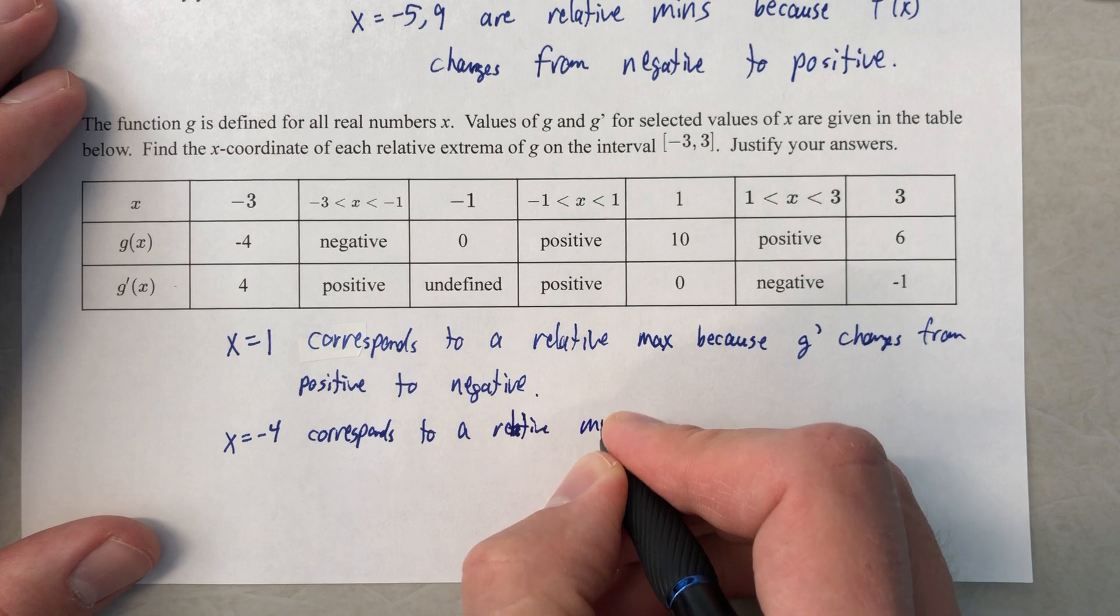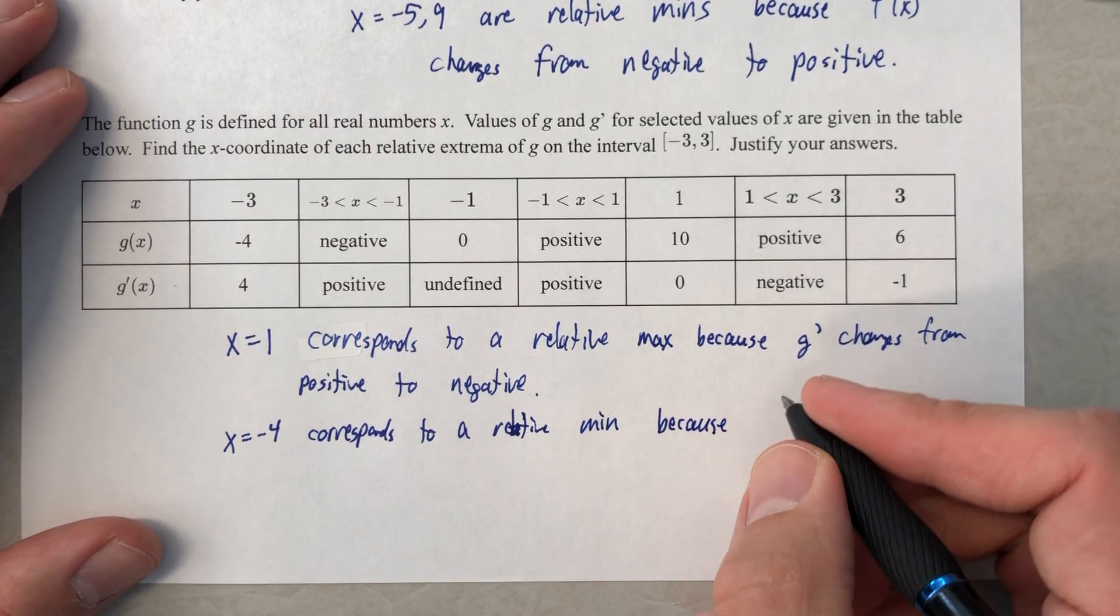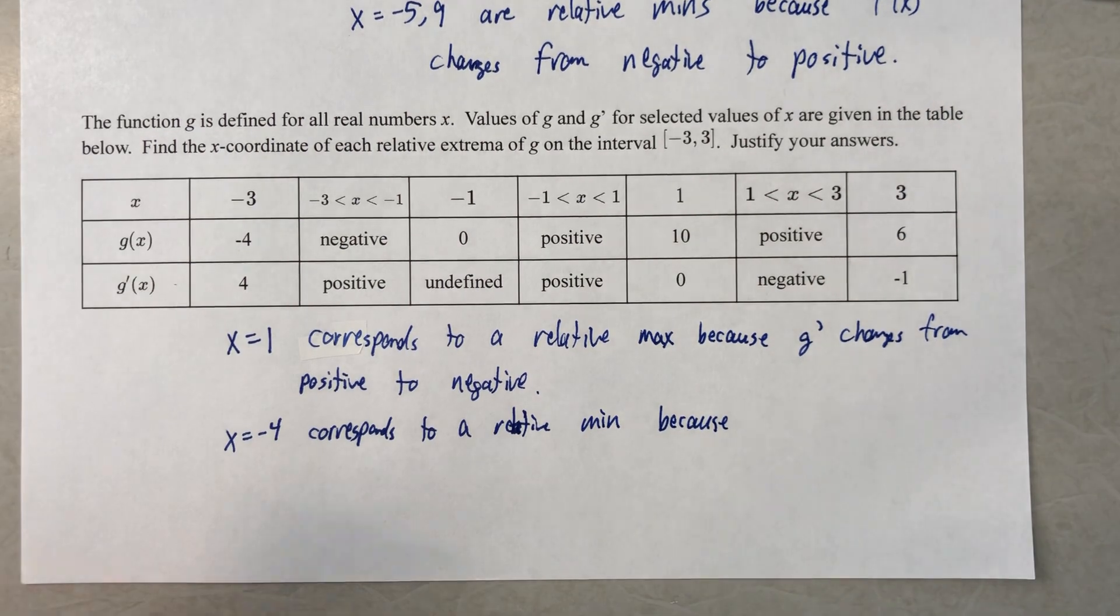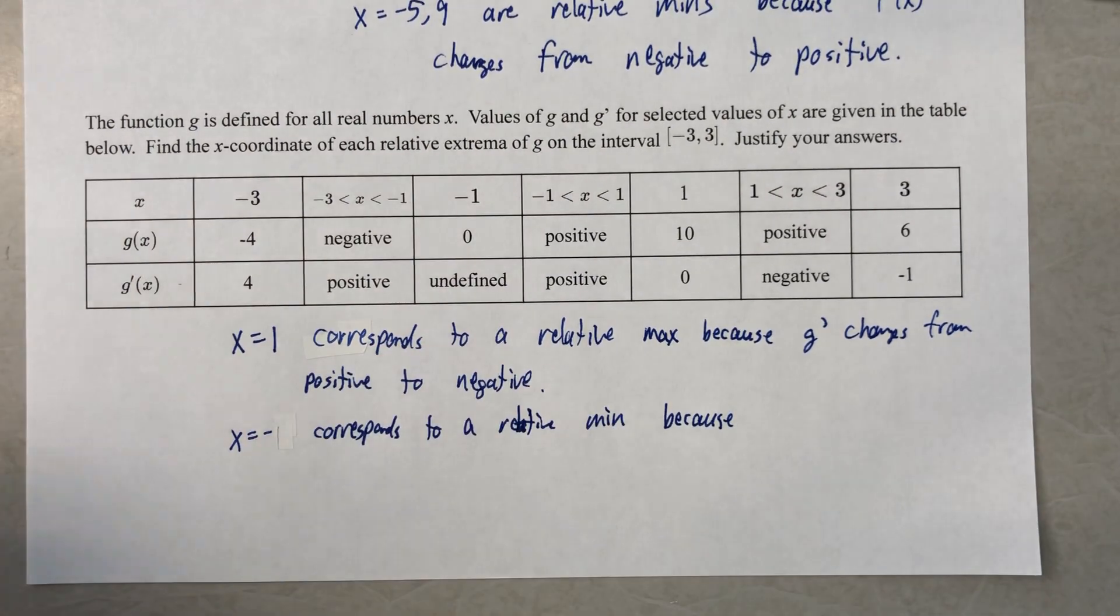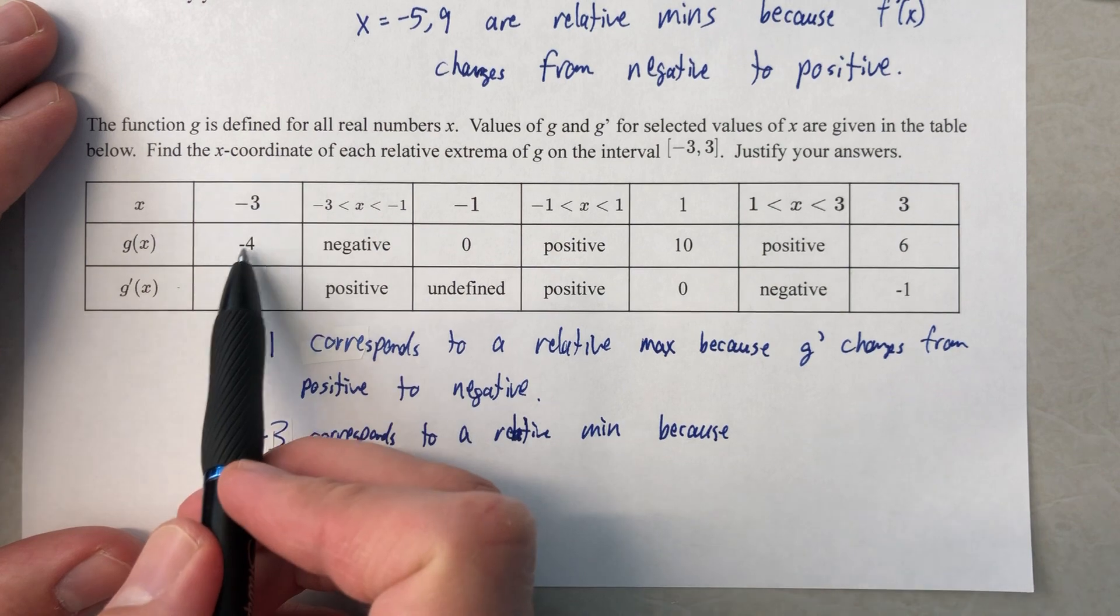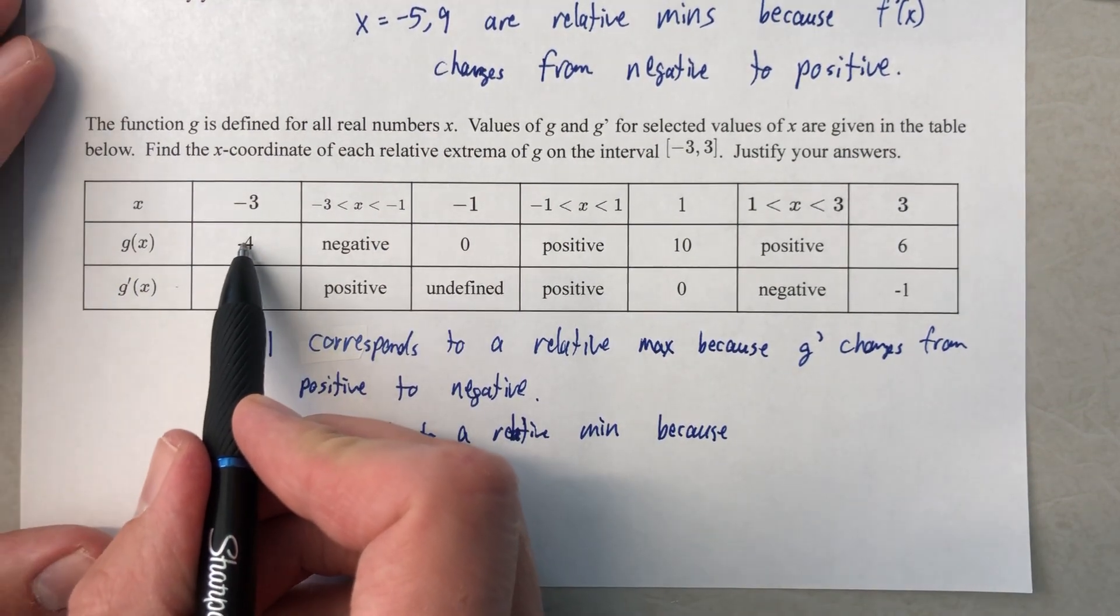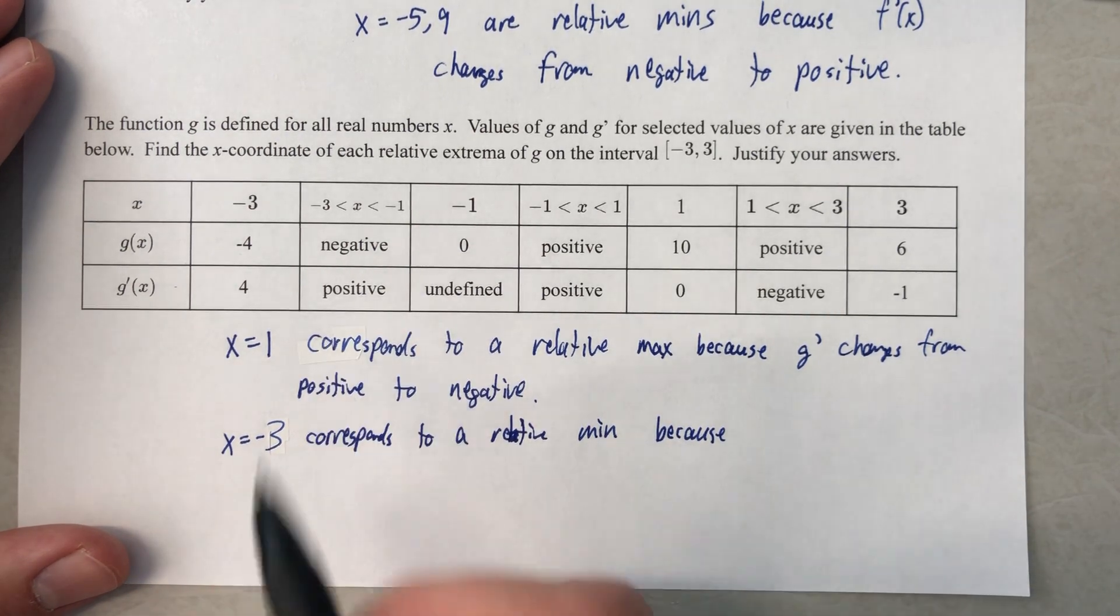x equals negative 4 corresponds to a relative minimum because I lied. Not x equals negative 4, x equals negative 3. I apologize for that. x equals negative 3, that's the value, that's the y value. And from this y value, the function is increasing after that.